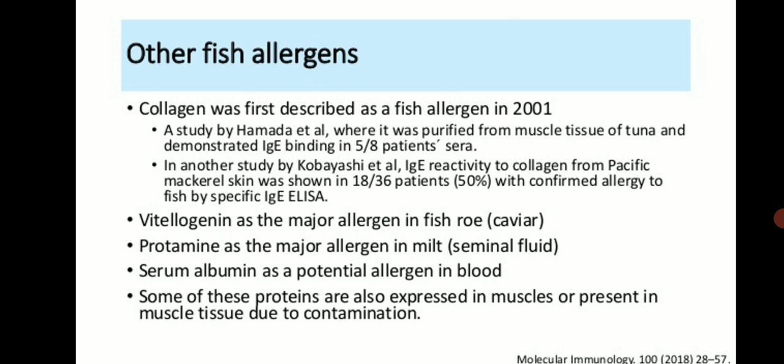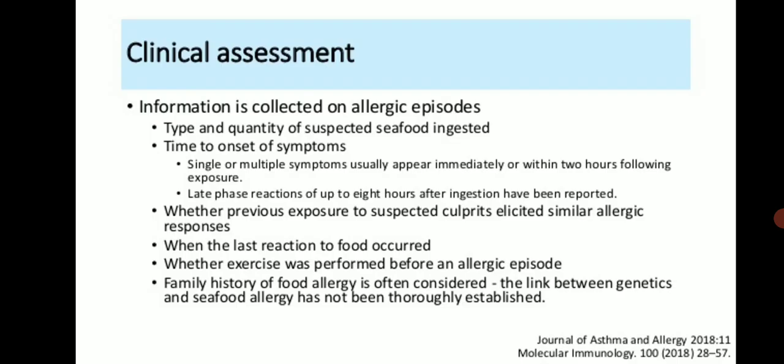Vitellogenin is identified as the major allergen in fish roe. Protamine is a major allergen in milt. Serum albumin is a potential allergen in blood. Some of these proteins are also expressed in muscle tissue and are present due to contamination.